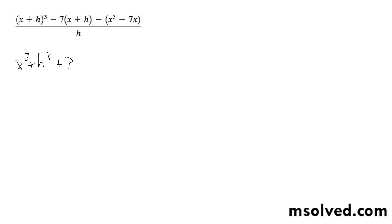I'll just do this, h cubed plus 3x squared h plus 3x h squared, and then distributing the middle term, I get minus 7x minus 7h, and then minus x cubed plus 7x, all over h.